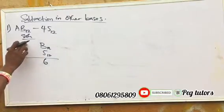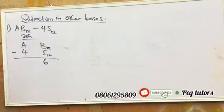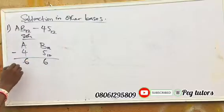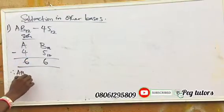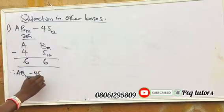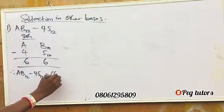So 10 is here, that's A. 10 minus 4 is 6, so 6 can also exist in base 12, so you can put in 6 as well. So which means, therefore, that AB base 12 minus 45 base 12 is equal to 66 base 12.